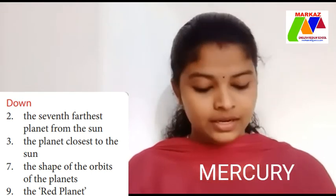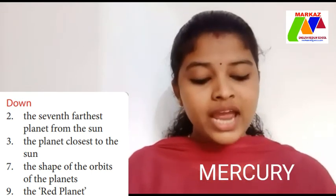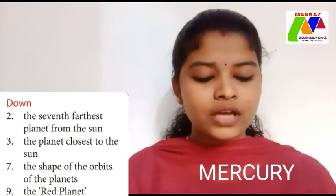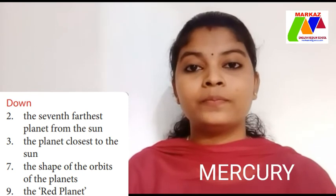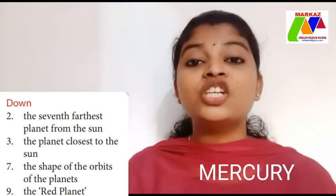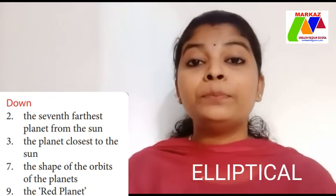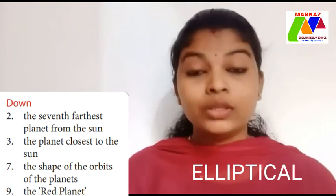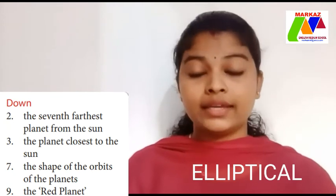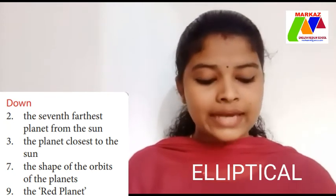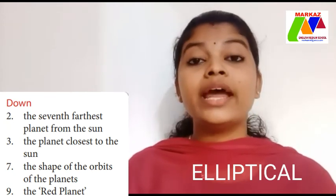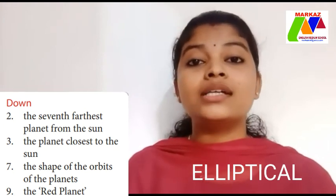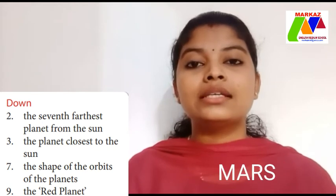Next, down seven: the shape of the orbit of the planet. The answer is elliptical. Next, down nine: the red planet. The answer is Mars.